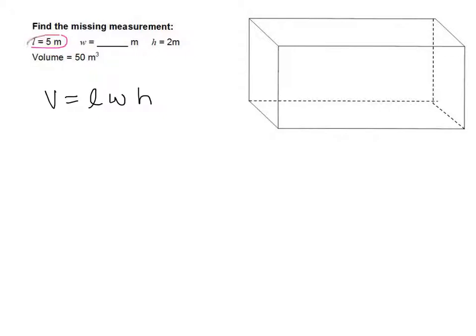So here's my length. This length would be that line right there. And that would be 5 meters. My height is 2 meters. And it would be this measurement right there. That would be 2 meters. And what we're looking for is our width, which is this one. There we go. That is our question mark. So that is what we're trying to find.